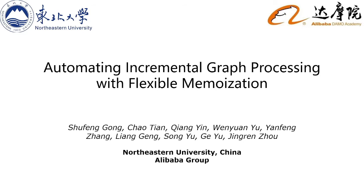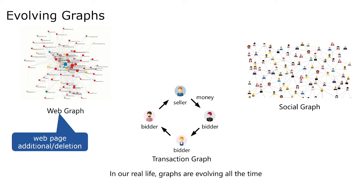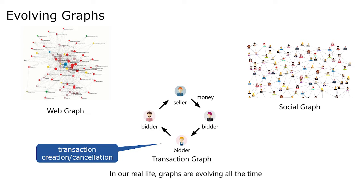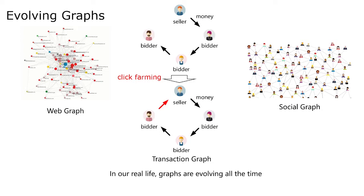In real life, graphs are evolving all the time. For example, the addition and deletion of web pages, the creation or cancellation of transactions, and the follow and unfollow between friends. The changes of graphs will lead to changes in graph analysis results. For example, the creation of a red edge results in click farming, since the refund of a seller's domain is noted through cancellation of the order. Thus, when graphs are updated, we should update the analysis results immediately.